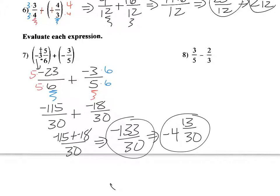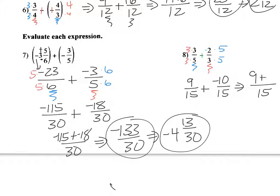Last example: unlike denominators. Multiply the first fraction top and bottom by three, and the second by five. Rewrite subtraction as adding the opposite. Three times three is nine over fifteen, plus negative two times five is negative ten over fifteen. With a common denominator of fifteen, nine plus negative ten gives negative one over fifteen, which cannot be simplified. That's a quick review of adding and subtracting fractions.